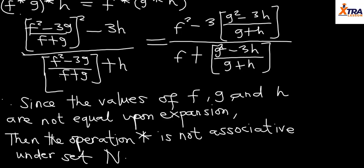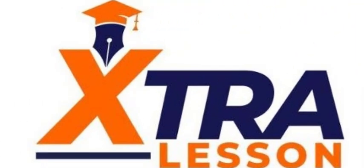Alternatively, instead of doing the full algebraic comparison, you can simply pick specific natural number values for f, g, and h, substitute into both sides, and verify they give different answers. This is a typical question that tests your abilities on associative and commutative properties. In the next class, we'll be looking at distributive property — both right-hand and left-hand distributive properties. See you next class, have a nice day!